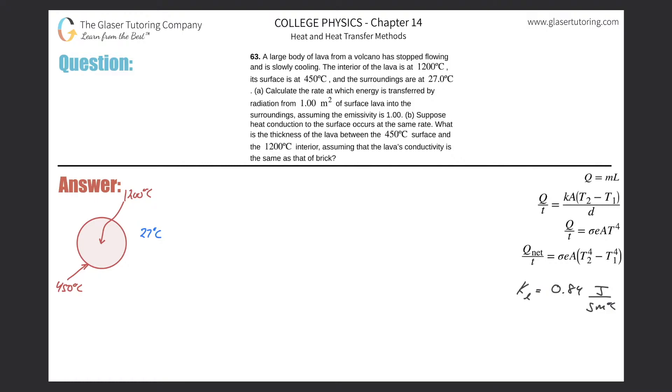Number 63: A large body of lava from a volcano has stopped flowing and is slowly cooling. The interior of the lava is at 1200 degrees Celsius, its surface is at 450 degrees Celsius, and the surroundings are at 27 degrees Celsius. Letter A: Calculate the rate at which energy is transferred by radiation from one square meter of surface lava into the surroundings, assuming the emissivity is one.